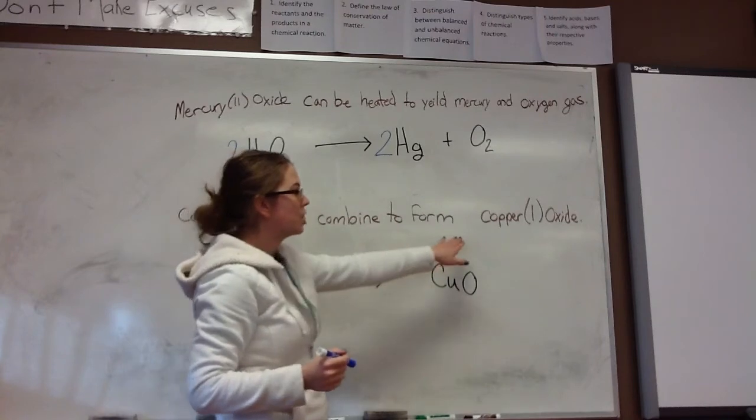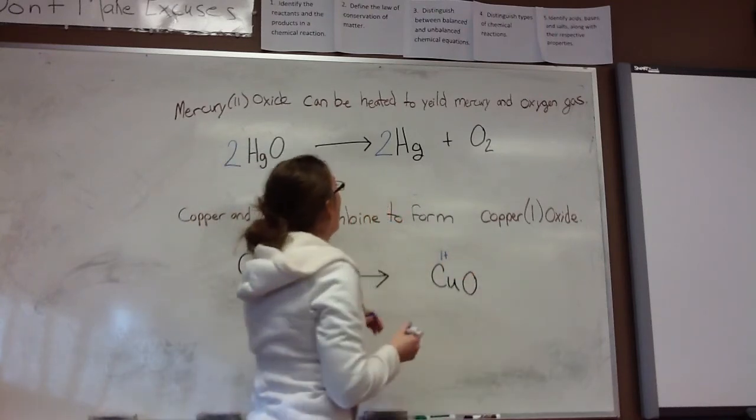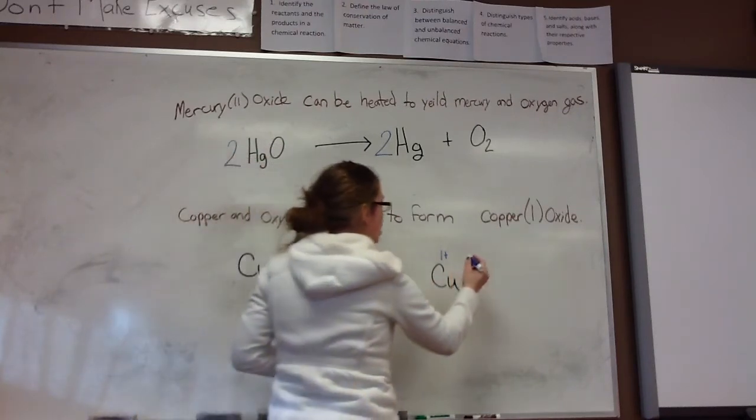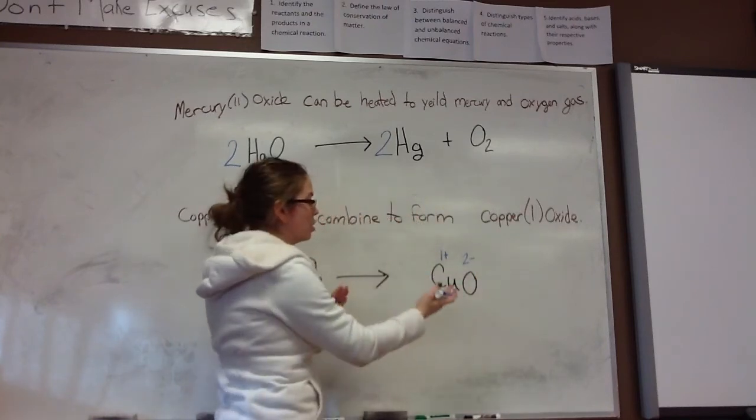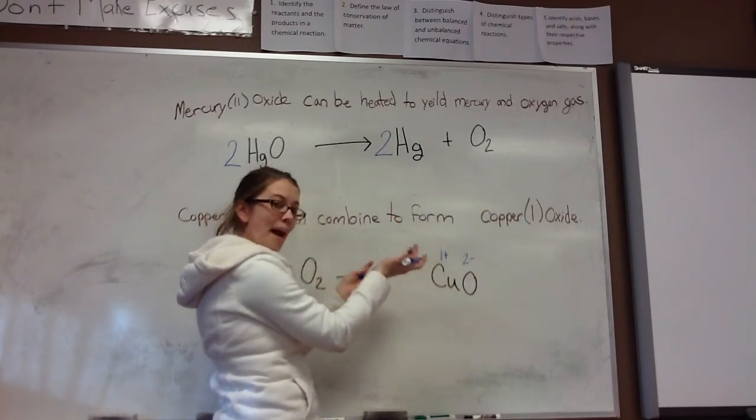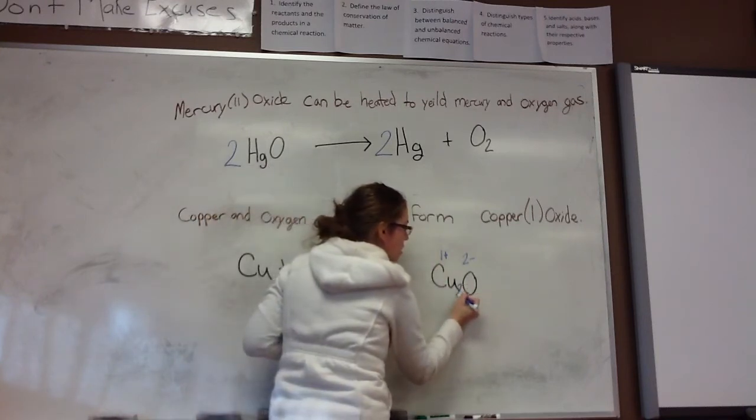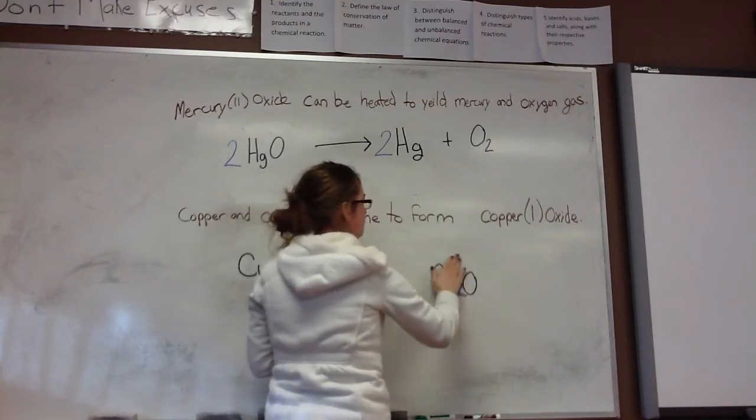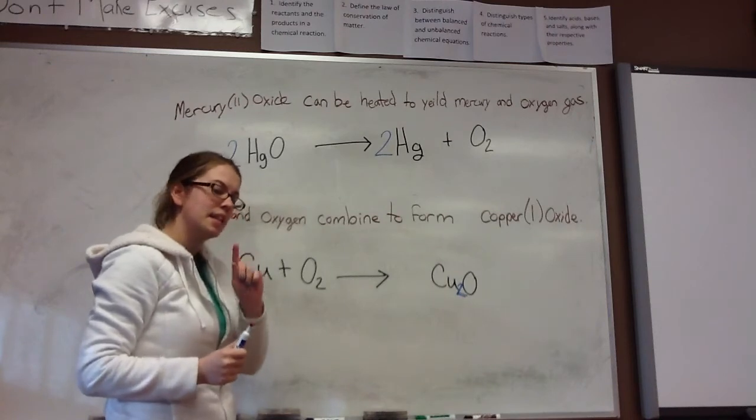Now, copper's charge is given in the Roman numeral. It has a charge of 1+. And as we talked about up here, oxygen has a charge of 2 minus. 2 minus and 1 plus don't balance. So we need to have two copper ions for every oxygen ion. Now that we have our correct symbols, we can balance the equation.